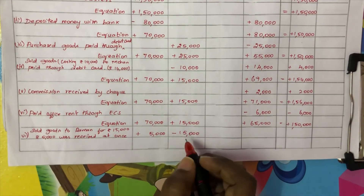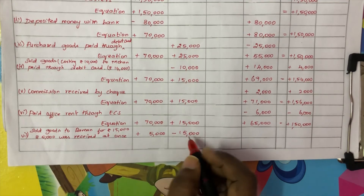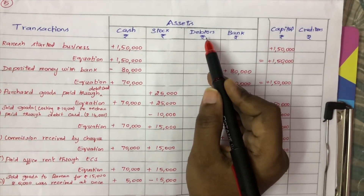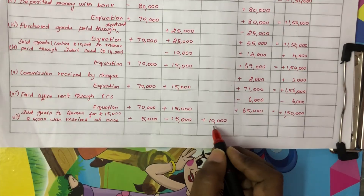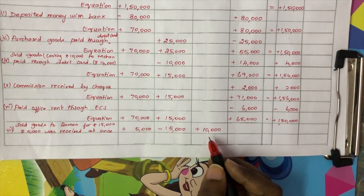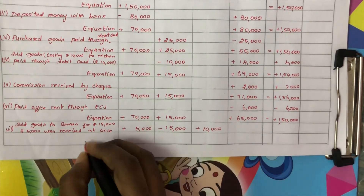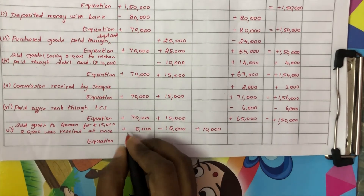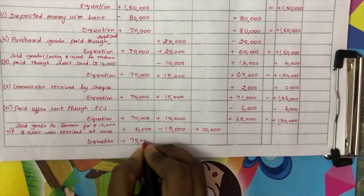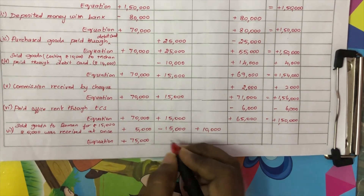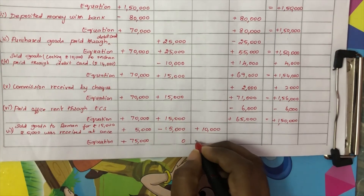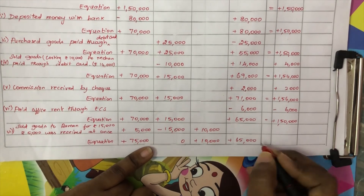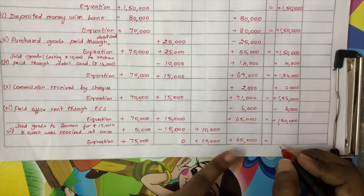Seventh transaction: sold goods to Raman for Rs. 15,000, of which Rs. 5,000 was received at once in cash and Rs. 10,000 remains as debtors. Cash increases by plus Rs. 5,000, so cash becomes Rs. 75,000. Stock decreases by Rs. 15,000, so stock becomes Rs. 0. Debtors are recorded as Rs. 10,000. Bank remains Rs. 65,000. We also need to add Rs. 3,000 profit to capital. The assets and liabilities sides tally.